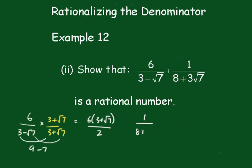This one is 1 over 8 plus 3 root 7 times 8 minus 3 root 7 over 8 minus 3 root 7. That's going to give me 8 minus 3 root 7 over, 8 times 8 is a 64.